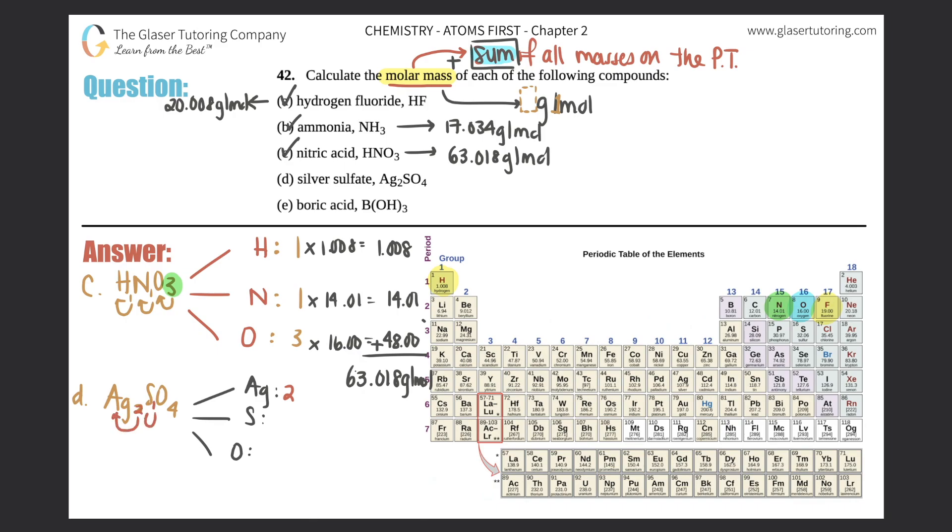How many Ag's do we have? We have two because the two goes for the Ag. How many sulfurs? One, because there's an imaginary one here. And how many oxygens? Four. Now we multiply by the masses. I got to find Ag - it's a transition metal, right here. So Ag is 107.9, so two times 107.9 you get 215.8. Sulfur is right below oxygen, right here, so in this case it's 32.06.